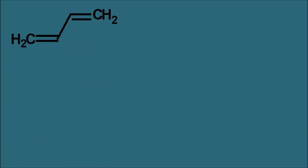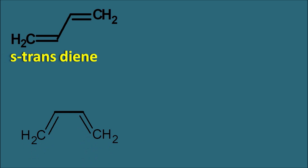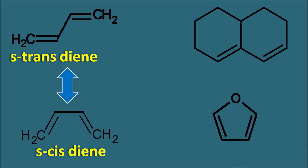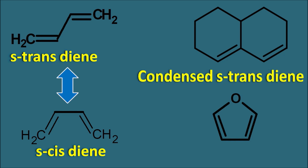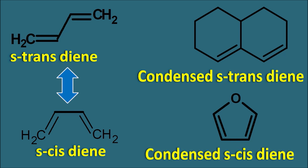Now let us look at different examples of dienes. The first one is simply an S-trans diene and the second one is an S-cis diene; we know they are easily interconvertible at room temperature. In the third example, the pi bonds are present on two different rings and they have S-trans configuration, so this is the condensed S-trans diene. In the fourth example, the pi bonds are on the same side of the sigma bond and they are in a cyclic structure, so this is a condensed S-cis diene. These dienes will show different chemical properties.